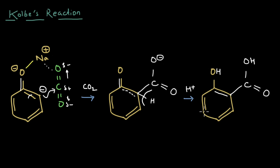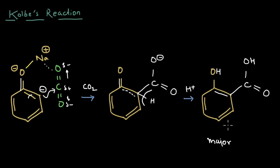A key question is: since OH is ortho/para directing, electron density should be higher at both ortho and para positions, so shouldn't we also get a para product? We do get some para product, but the ortho product is the major product and the para product is minor. The reason is that in the intermediate steps, the sodium ion has a pulling or coordinating effect on the oxygen of CO2, aligning it toward the ortho position and making that pathway slightly more stable — similar to how hydrogen bonding can direct regioselectivity.